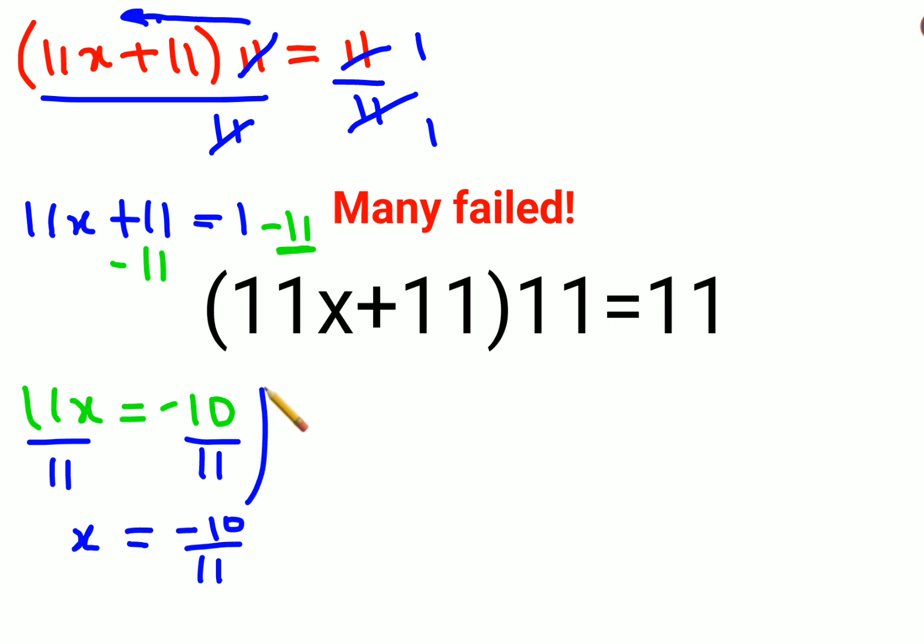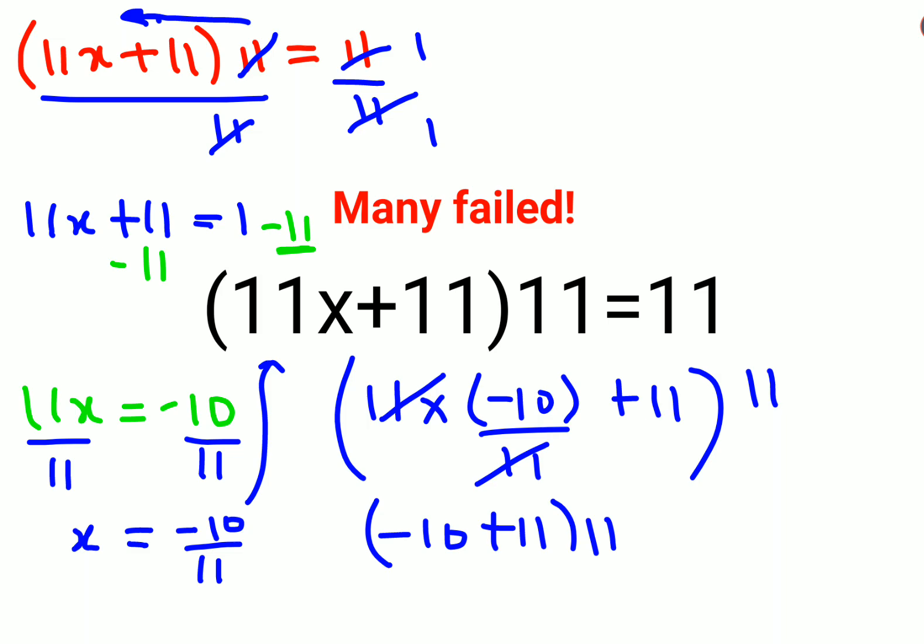Now let's put this value back in the question. So we have 11 into x, we'll keep it as minus 10 upon 11 plus 11, and everything gets multiplied by 11. So now this gets cancelled. Now we have minus 10 plus 11 and it is getting multiplied by 11. So minus 10 plus 11 is nothing but 1 into 11, so answer comes out to be 11 which is your RHS.